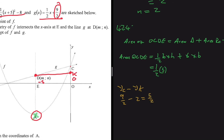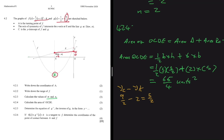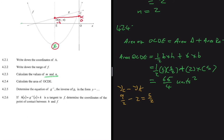So the area = ½ × base × height for the triangle = ½ × 5 × 5/2, plus the rectangle area = length × breadth = 2 × 5. Adding these gives 65/4 square units.